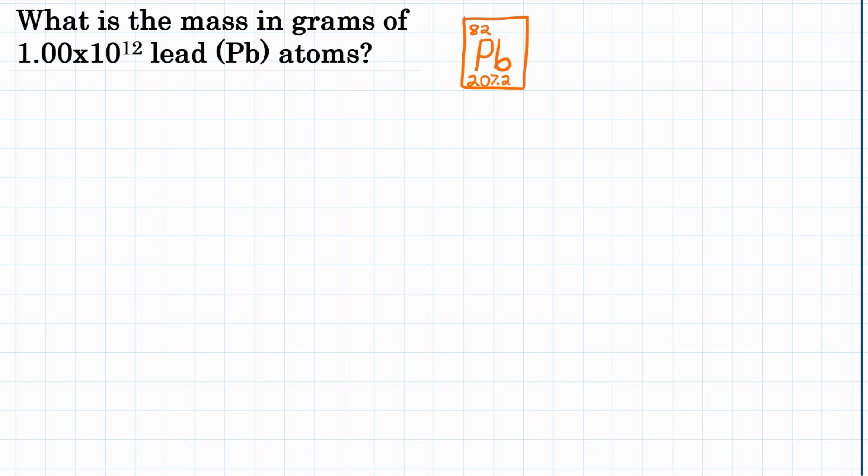All right, what is the mass in grams of 1.00 times 10 to the 12th lead atoms? So we are converting atoms or particles to grams, to mass. This is going to be a two-step problem.